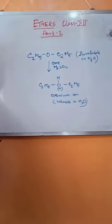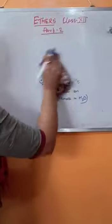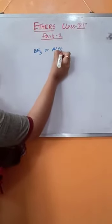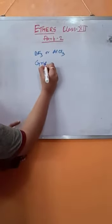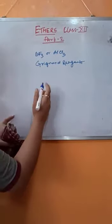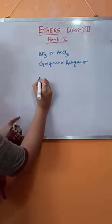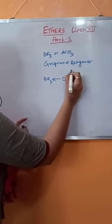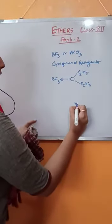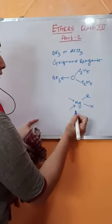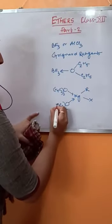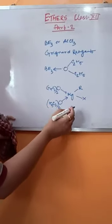The next reaction is formation of coordination compounds. Lewis bases such as BF3 or AlCl3 or Grignard reagents on treatment with ethers will result in the formation of coordination compounds. This is the coordination compound of ether with Lewis bases like BF3, and this is the coordination compound of Grignard reagent with ether.